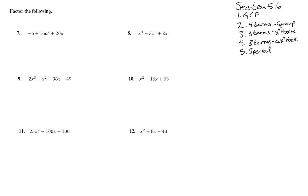I don't like that. That's not in any good format at all. Let's write that out with the 16a squared first plus the 20a minus the 6. Now let's look at it. Step number 1, greatest common factor. Yeah, there's a 2 in everything.